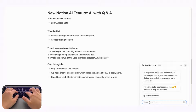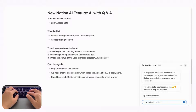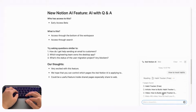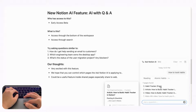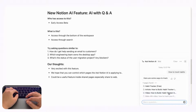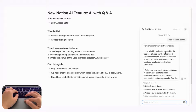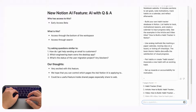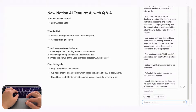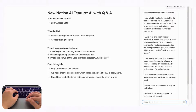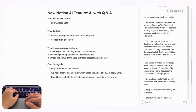For example, if we just ask it how to track habits — since we have many resources on habit tracking — we can see what happens. It's going to start thinking about it and searching through all of our pages, and then it shows ways you can use it and pulls up where it got the information from. For example, it says article and video titled 'How to Build a Habit Tracker in Notion' and so on.